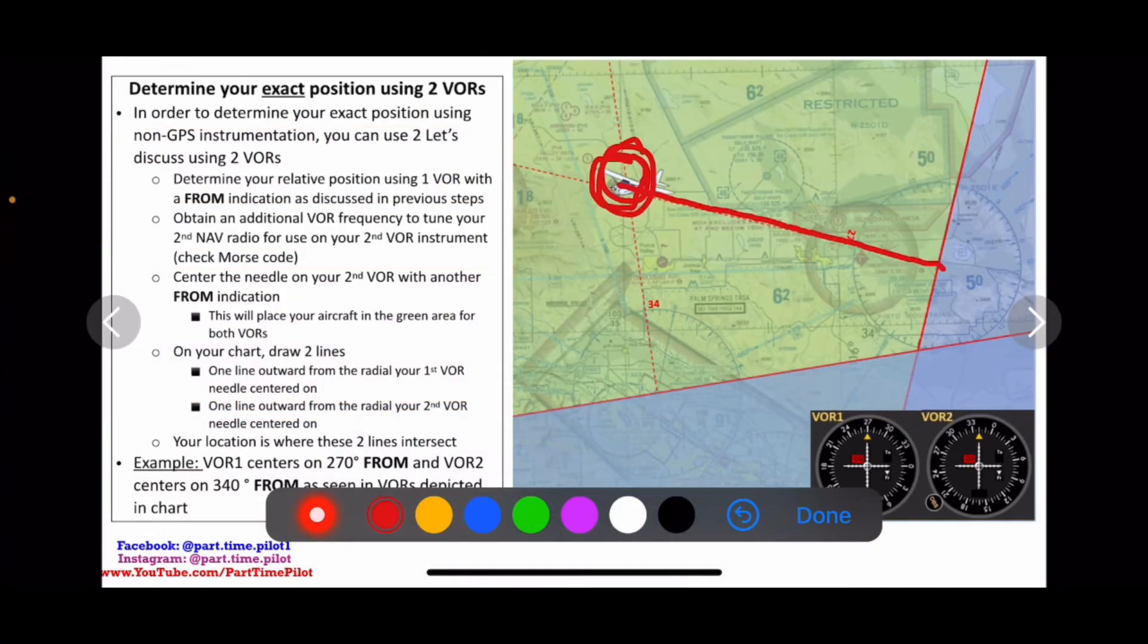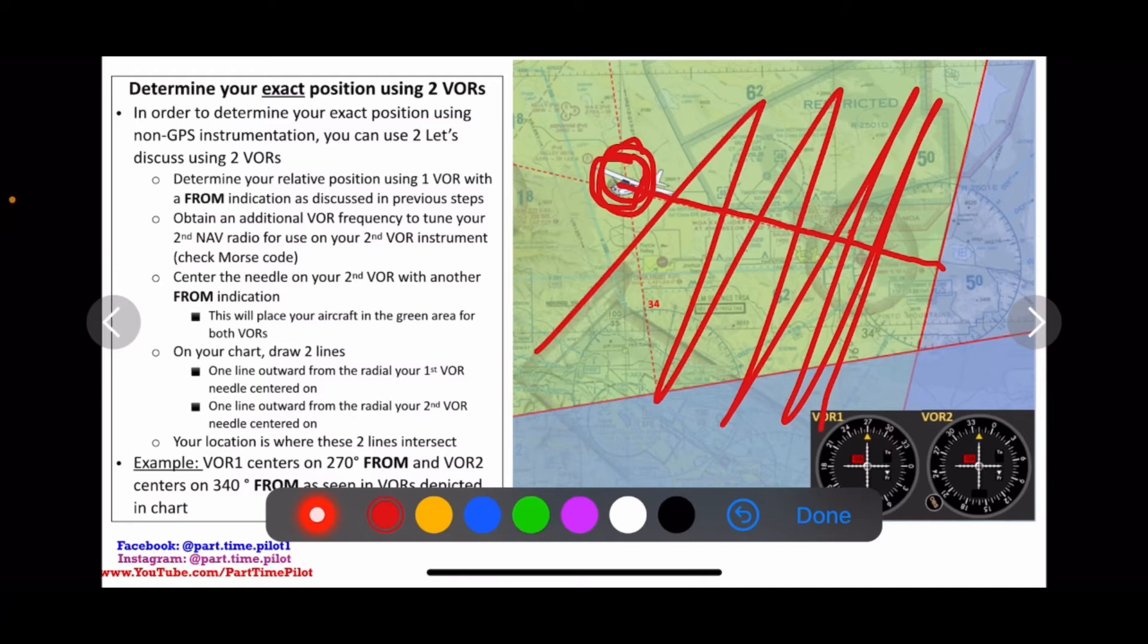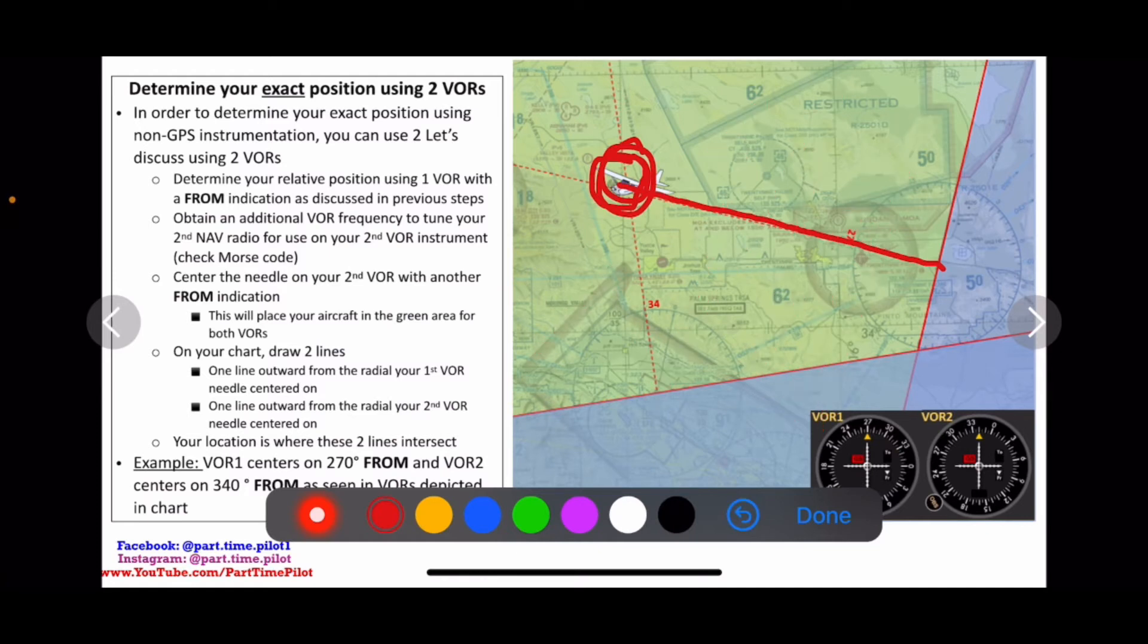So that means we're on the two seven zero radial on the from side. That's this green side here. So we know we're on the side of the radial on the two seven zero.